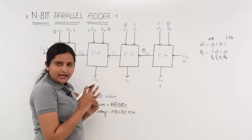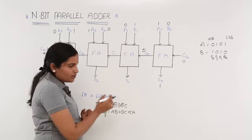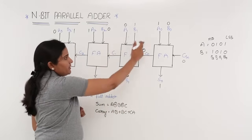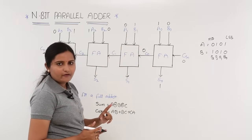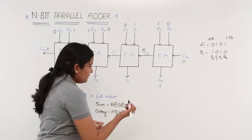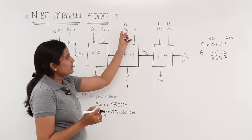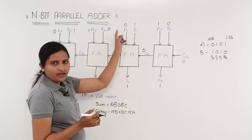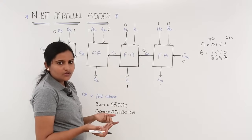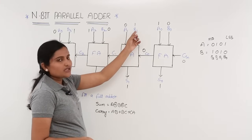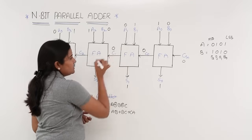Now operating the second full adder. The input bits are 0, 1, 0. To get the sum, take XOR of 0, 1, 0 — there is an odd number of 1s, so XOR gives 1, meaning S1 = 1. For carry C1: compute 0×1 + 1×0 + 0×0 = 0. There is no case giving a 1. Adding all zeros gives carry C1 = 0.